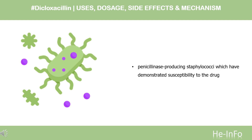What is dicloxacillin used for? It is used to treat infections caused by penicillinase-producing Staphylococci which have demonstrated susceptibility to the drug.